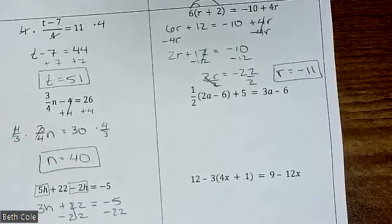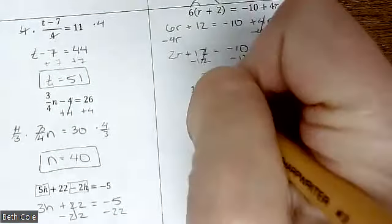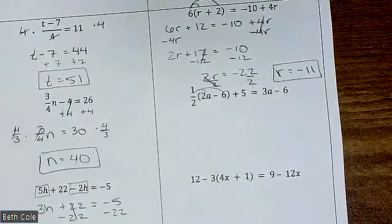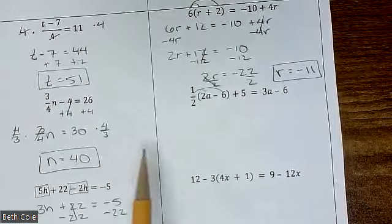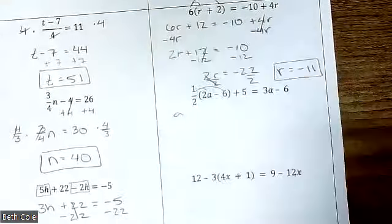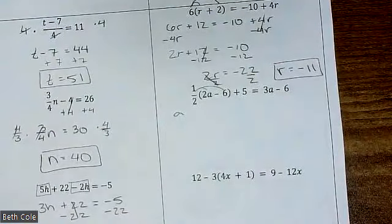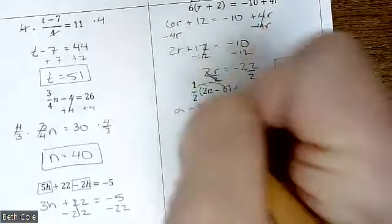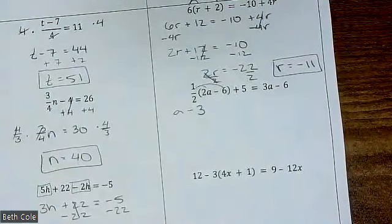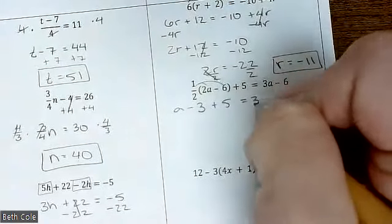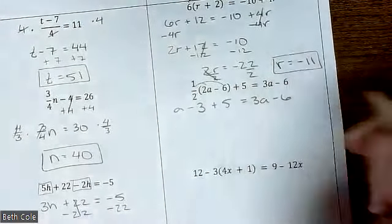All right, here we're going to have to distribute a one half. I like the computers put away when I'm going over stuff, but you could always use your calculator. What's half of 2? One — so you would have one a, or just a. Minus — how'd you get 3? Half of 6. All right, and then you're unfortunately going to just have to recopy everything else that's there.